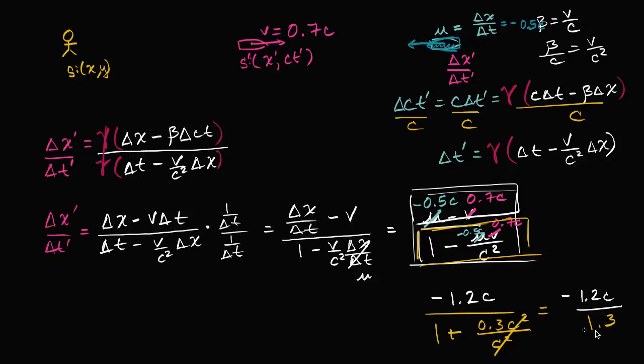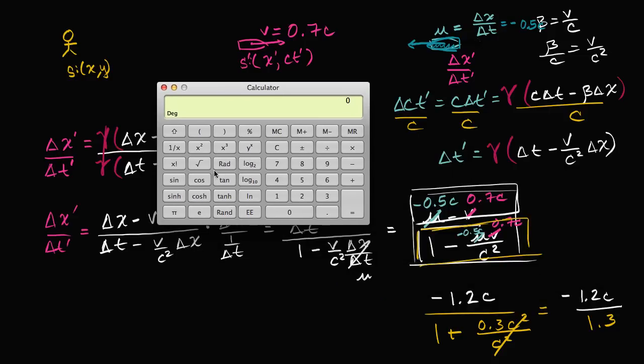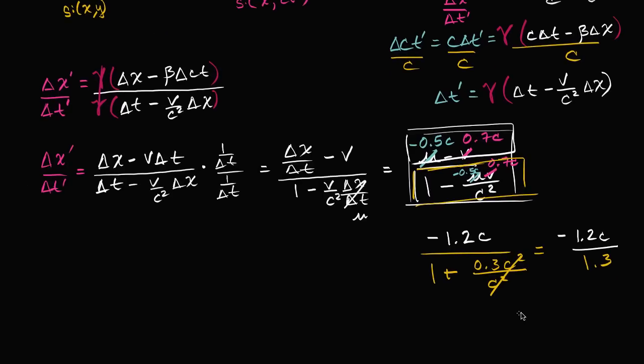And so lucky for us, this is going to be less than c. Or its absolute value is going to be less than c. So let's get a calculator out. So if we have 1.2 divided by 1.3, this is equal to approximately 0.92. So this is going to be approximately negative 0.92c.